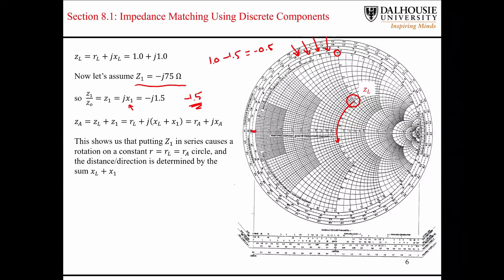all of the impedances are negative because this corresponds to the capacitive region. So we look for the negative 0.5, and we know that we are going to rotate downward until we connect